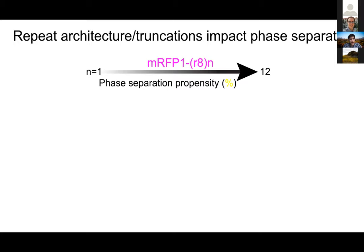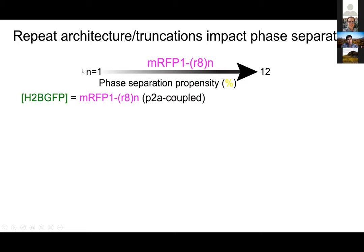Here's the actual data. We fuse a red fluorescent protein, mRFP, with engineered constructs having n copies of repeat 8 from human filaggrin. We assess phase separation propensity of these constructs inside the cell from one repeat of the R8 domain up to 12 repeats, which is the full length of filaggrin. We use a viral 2A signal to couple expression of two different constructs — for every mRFP-R8 molecule made, we also make one copy of a chromatin protein bound to GFP to visualize the nucleus, allowing quantitative comparison.